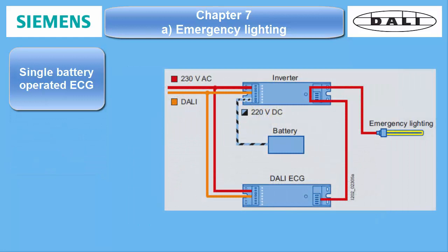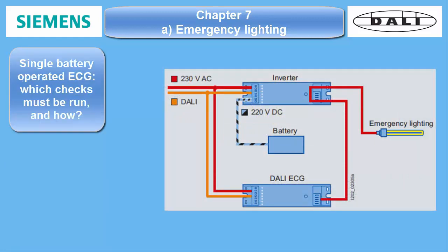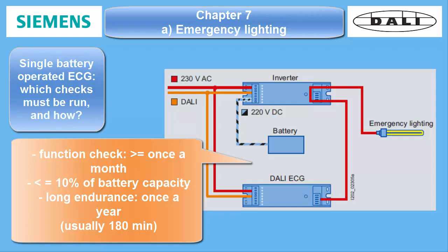With single battery operated ECG. According to EN 62034, there are function checks and endurance checks which not only have to be carried out, but also recorded very precisely. A function check must be carried out at least once a month and must not last longer than 10% of the battery capacity. The endurance check must be run at least once a year and must prove that the battery is still good to operate the luminaire for at least 180 minutes.